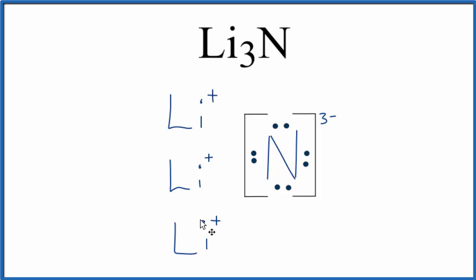Since the lithiums are positive and this nitrogen is negative, we have these positive charges that are attracted to the negative, and this forms the ionic bond in Li3N.